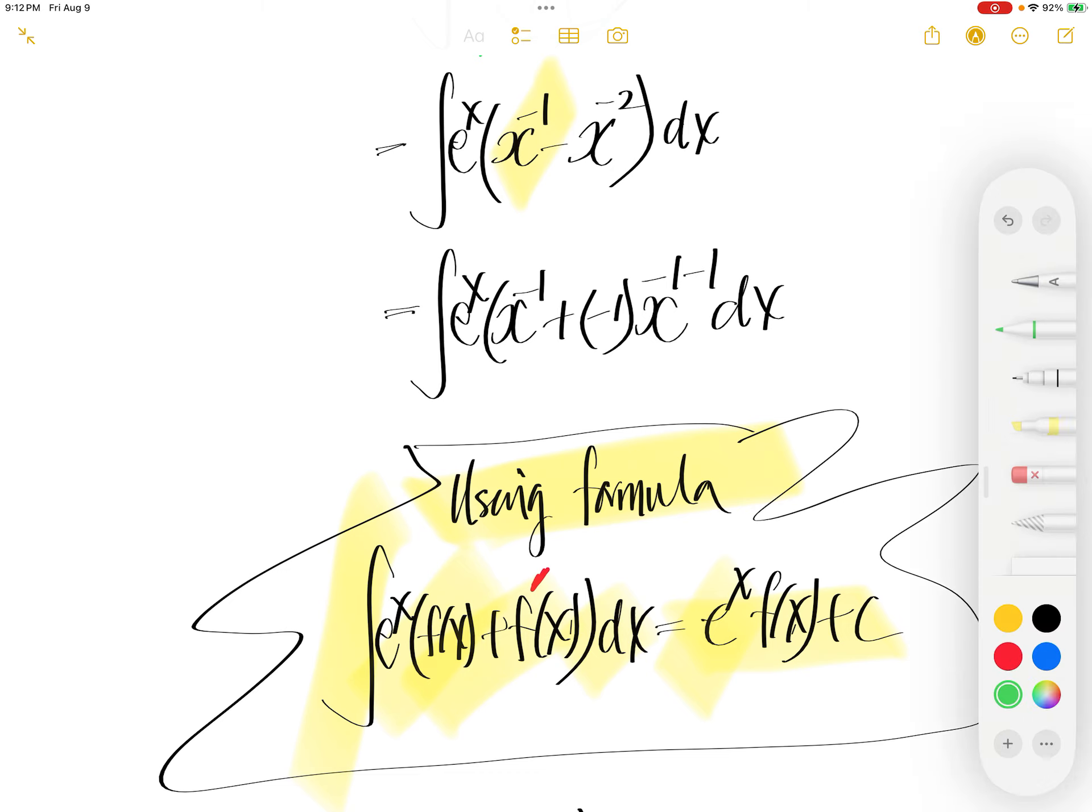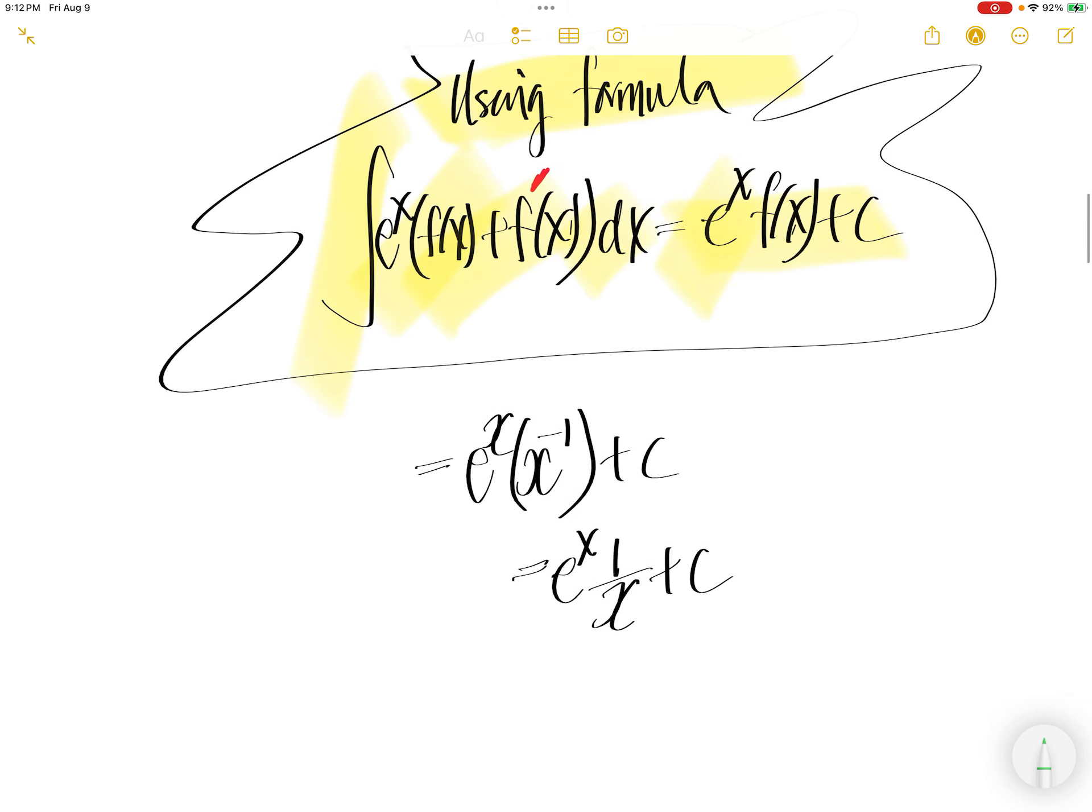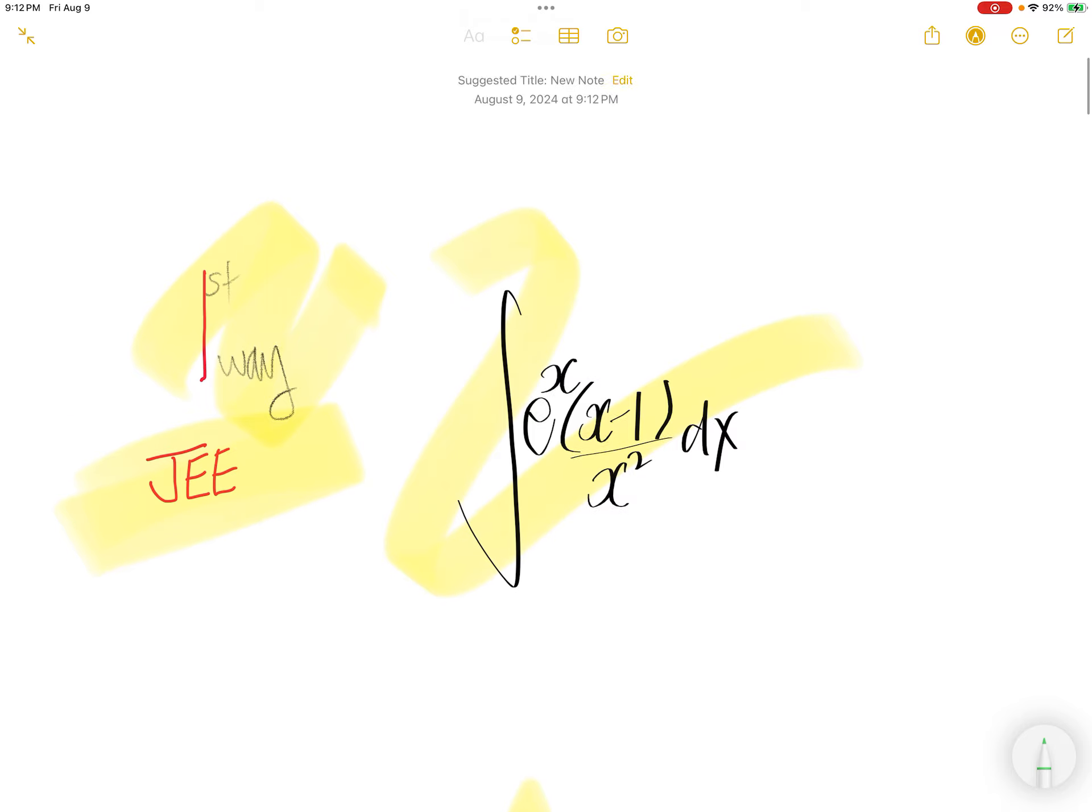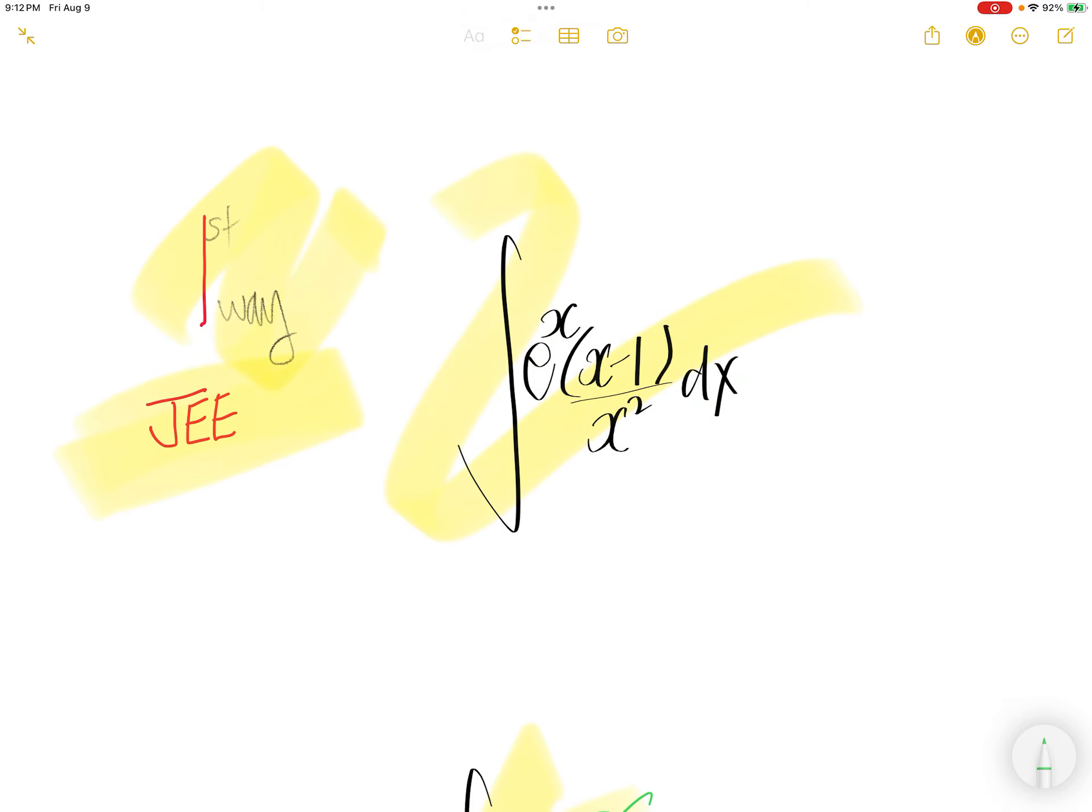This piece is f, and then the second piece here is f prime. Therefore, using the formula, you just plug in the f, which is this, and write that as one over x. Done!